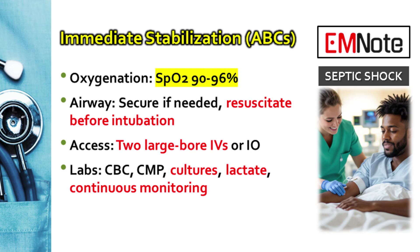Get two large peripheral IVs or go straight for an IO if needed. Don't delay giving medications or fluids while waiting for a central line. Draw everything up front: blood cultures times two from different sites, lactate, and get continuous monitoring on. Insert a Foley catheter to track urine output — it's a great simple sign of kidney perfusion.